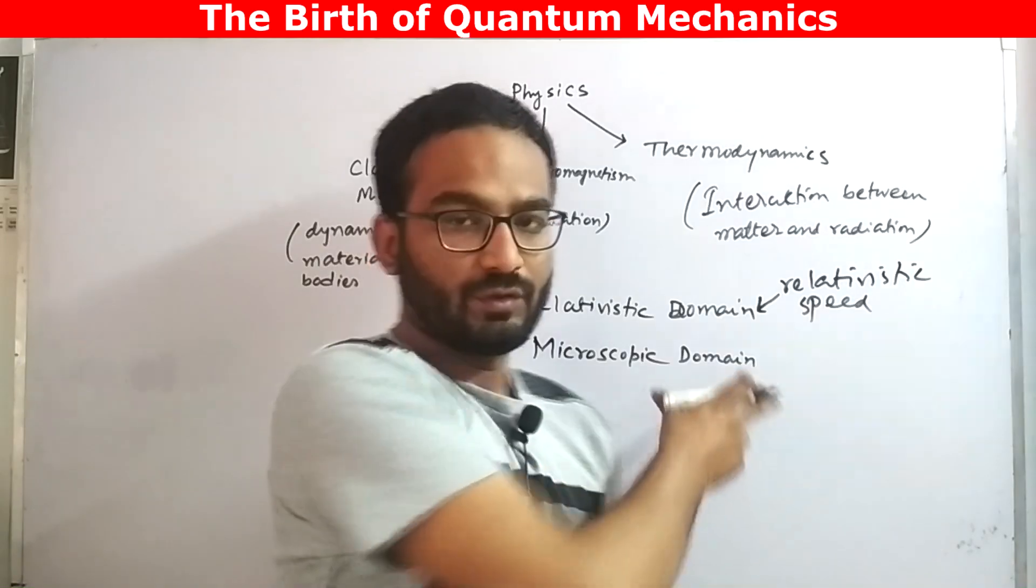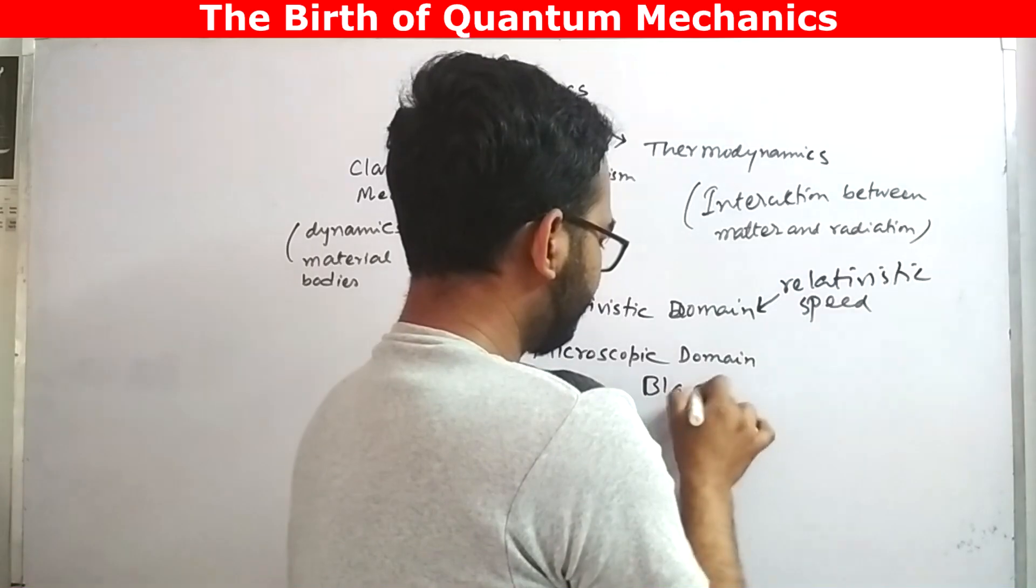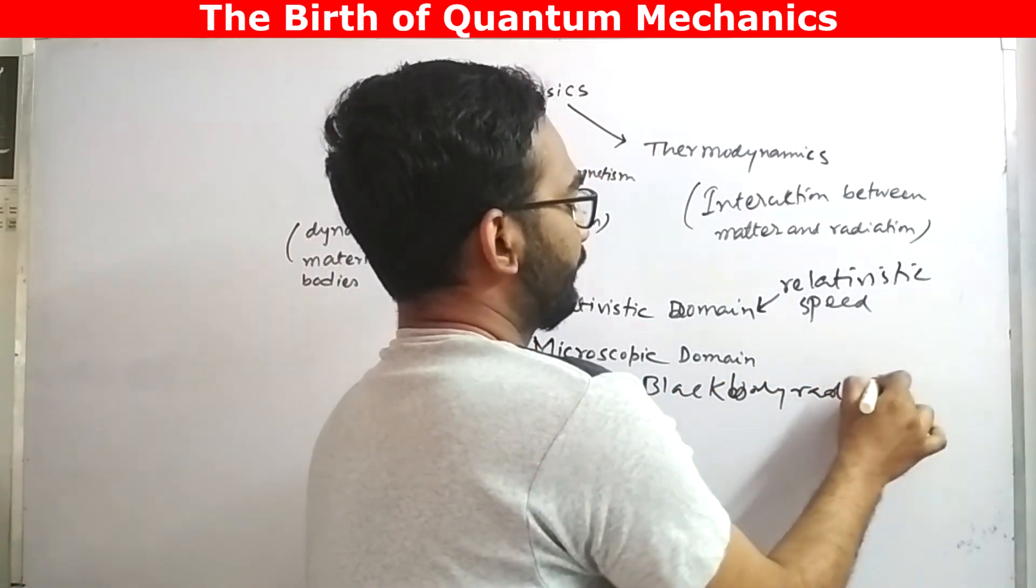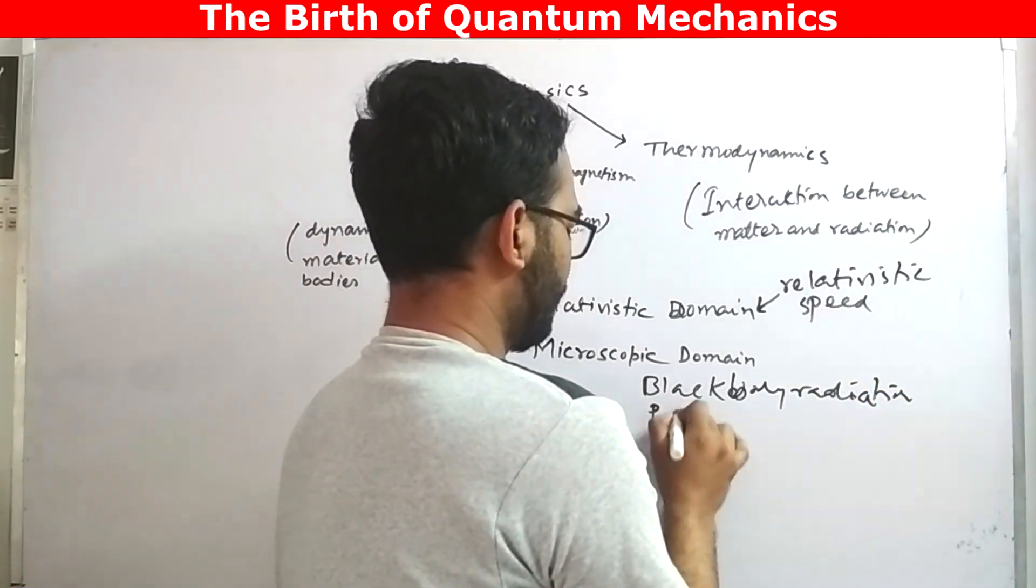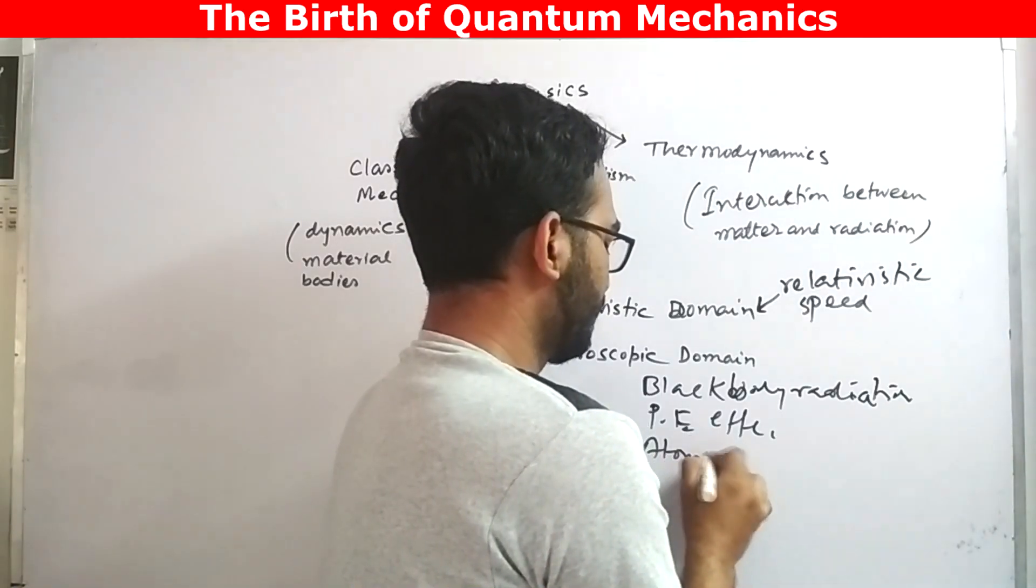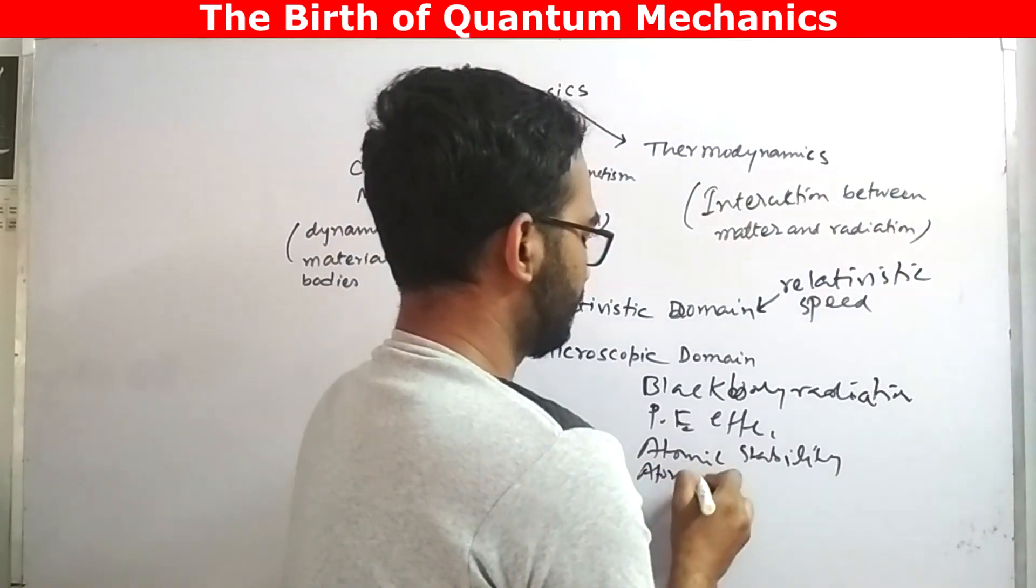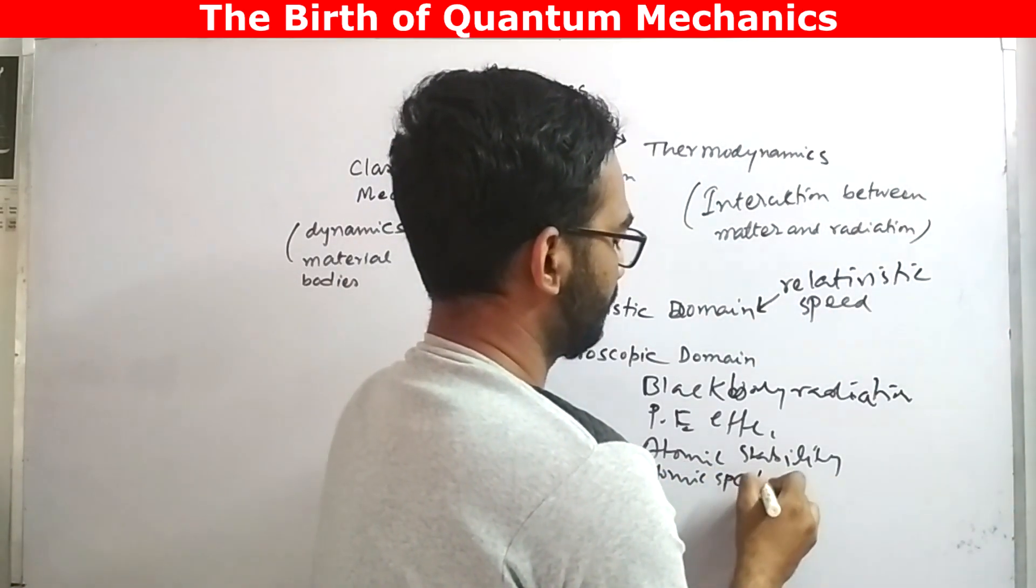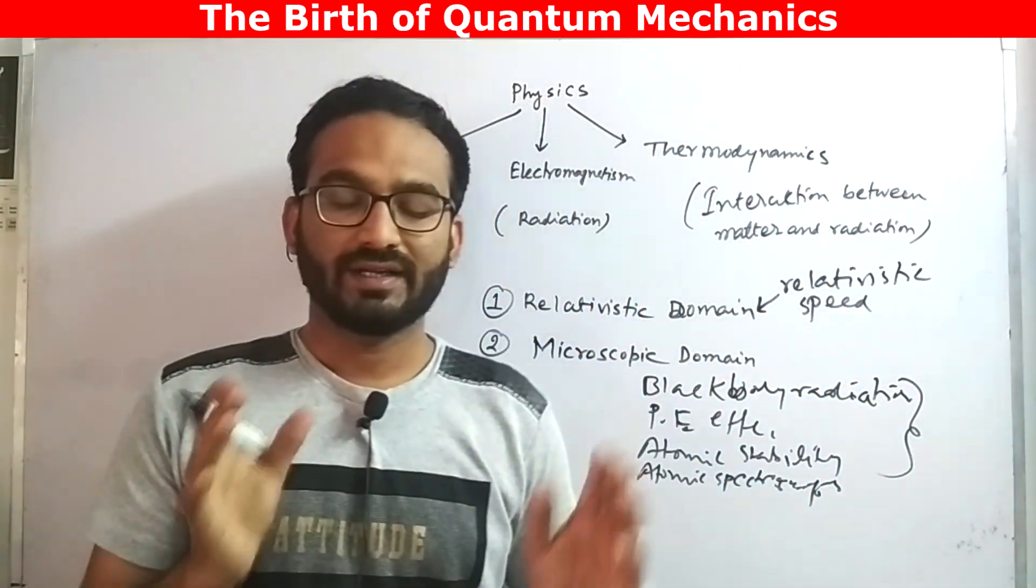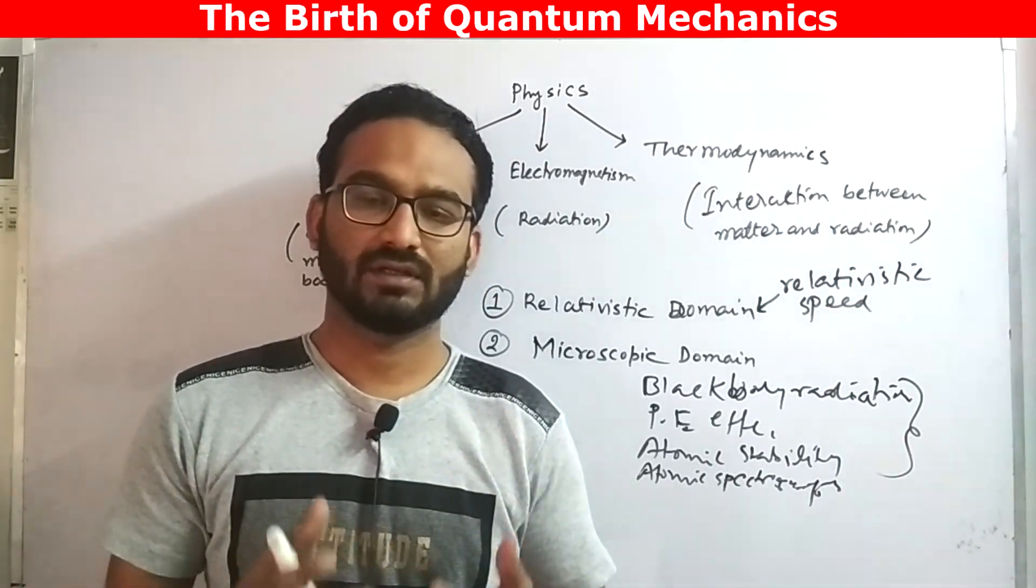In case of microscopic domain, several microscopic phenomena like black body radiation, photoelectric effect, atomic stability, and atomic spectroscopy, these many things we could not explain using classical physics and that were the limitations of classical physics.